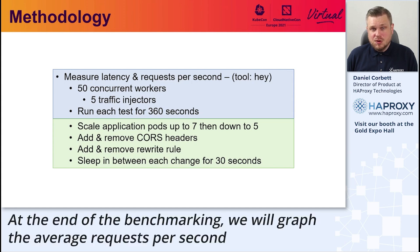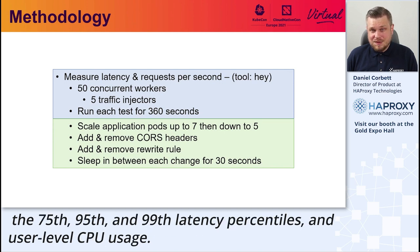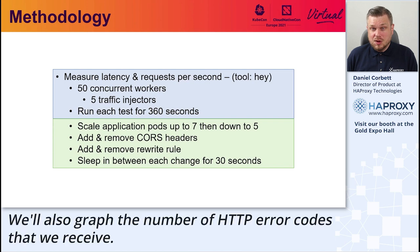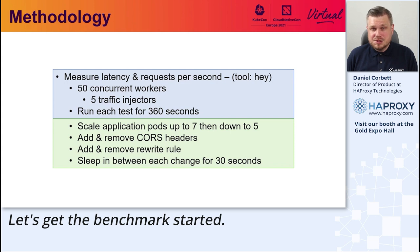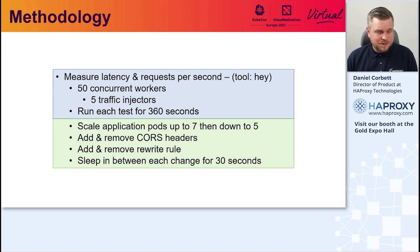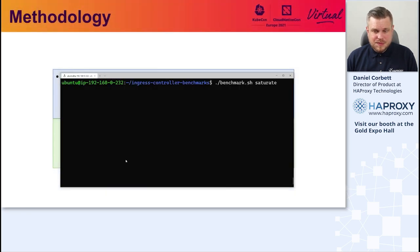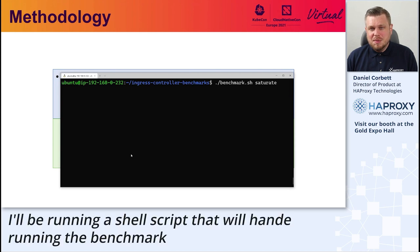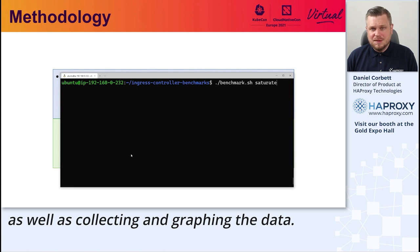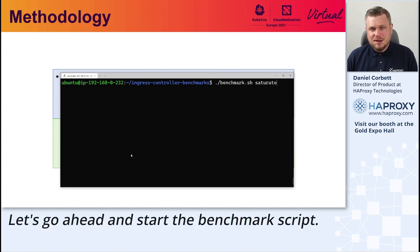At the end of the benchmarking, we will graph the average request per second, the 75th, 95th, and 99th latency percentiles, and user-level CPU usage. We will also graph the number of HTTP error codes that we receive. Let's get the benchmark started. I'll be running a shell script that will handle running the benchmark, as well as collecting and graphing the data. Let's go ahead and start the benchmark script.